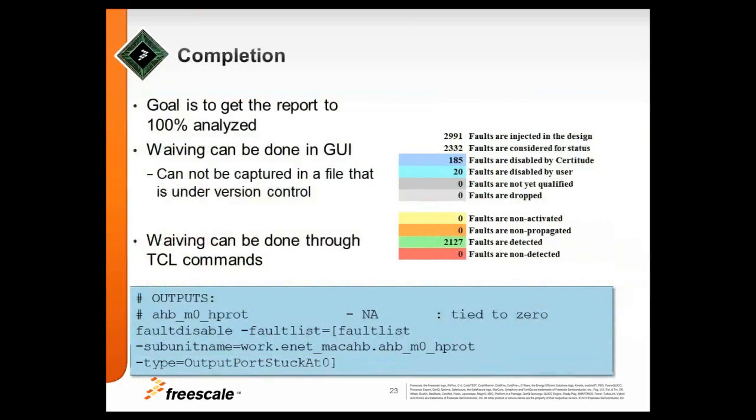Completion. This gets down to this analyzed. And I think it was also mentioned by Tim. You have a lot of faults you don't want to cover. And you need to waive those things. So, you want to get to 100% analyzed. Waiving can be done in the GUI. You can have a TCL command. You want to get everything all detected. Nothing is not detected. And this is how you can specify this in a TCL command to waive something.